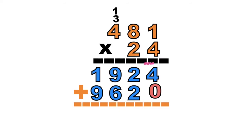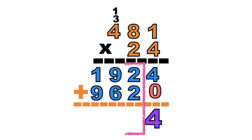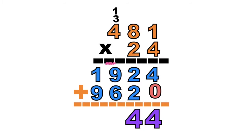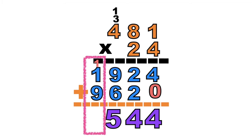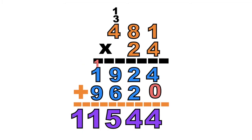So let's add them. 4 plus 0 equals — that is 4. How about 2 plus 2? Equals 4. 9 plus 6 equals — it's 15. Write 5 here, then carry 1. How about 1 plus 1 plus 9 equals — fantastic! It's 11. So the product of 481 and 24 is 11,544.